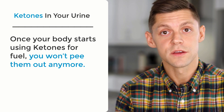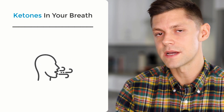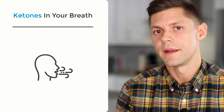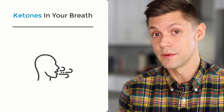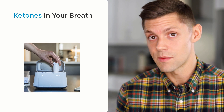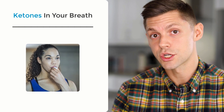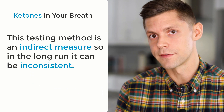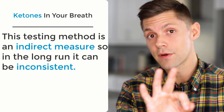Number two is breath. There are some companies out there that have meters where you can blow into them, kind of like a breathalyzer. What happens here is the acetone you breathe out as excess is just an unreliable marker, and the machines are really expensive. There's a company called Levo that makes a really good one, but it's pretty expensive. You take the little machine, blow into it, and it gives you a reading of your acetone levels. Again, that's a bit of an indirect measure — it's not really what's floating around in your bloodstream — so it can be a little inconsistent over the long run.